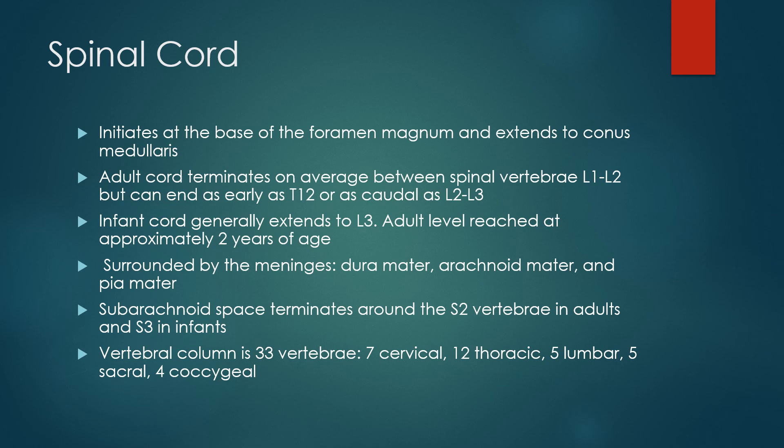The column itself has 33 vertebrae: 7 cervical, 12 thoracic, 5 lumbar, 5 sacral, and 4 coccygeal. The sacral column is largely fused and the coccygeal portion is pretty much completely ossified.